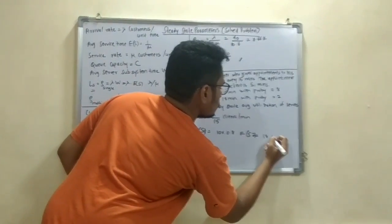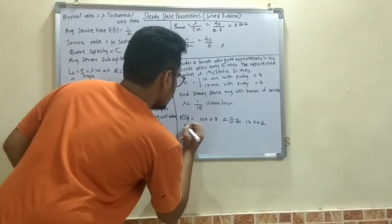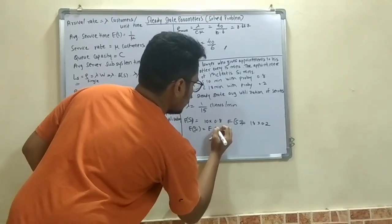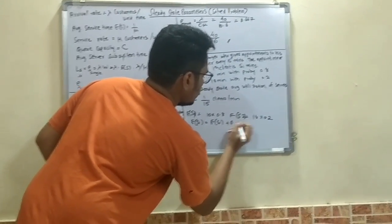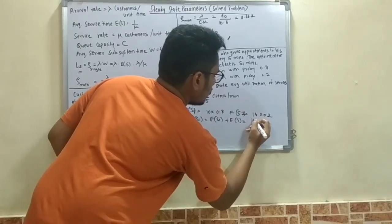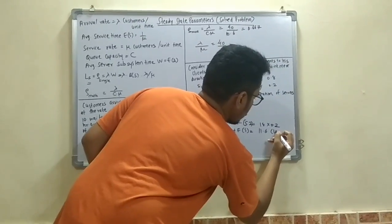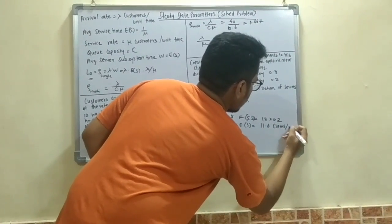So S1 that you will calculate as 10 into 0.8 and S2, that is ES1 and ES2, that is 18 into 0.2. Now the mean value of this would be ESI. So ESI would be ES1 plus ES2 which would come up to be 11.6, and the unit is customers or clients per minute.